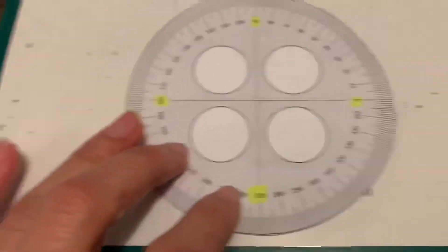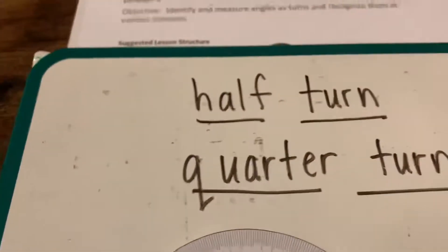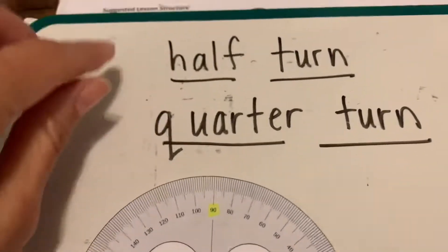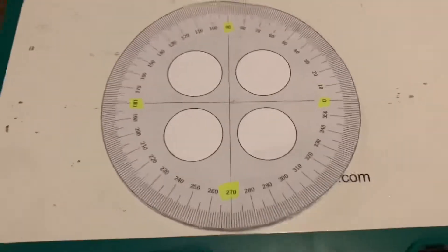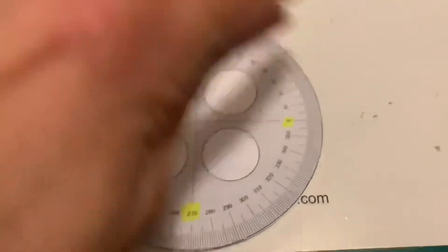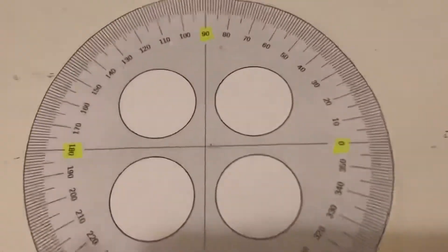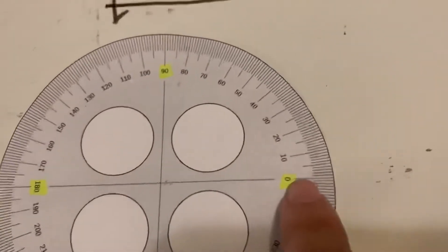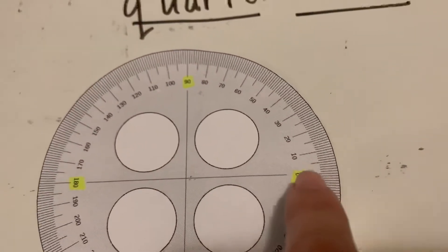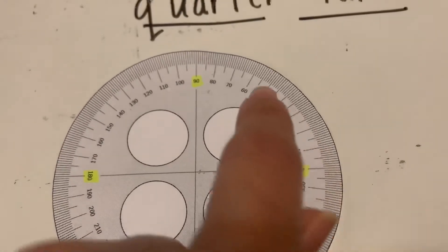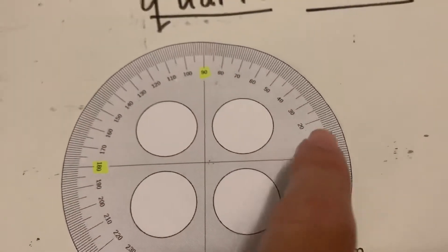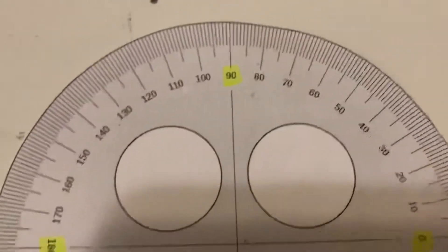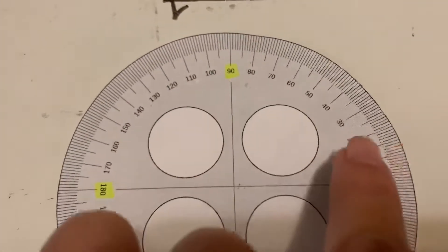These numbers are important because when we're talking about angles as turns, those are the degrees we're going to be using. Important words I'm going to be saying a lot during this lesson are half turn and quarter turn. Here's our circular protractor — here's zero degrees — and if I move up the protractor 90 degrees, that is what I call a quarter turn.